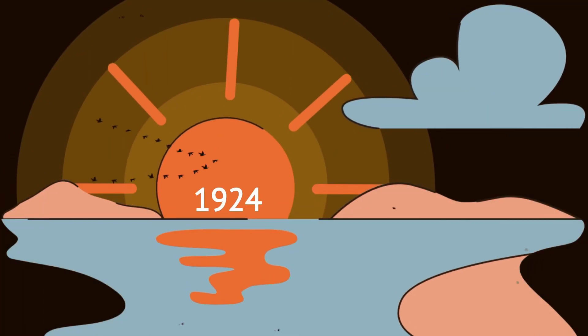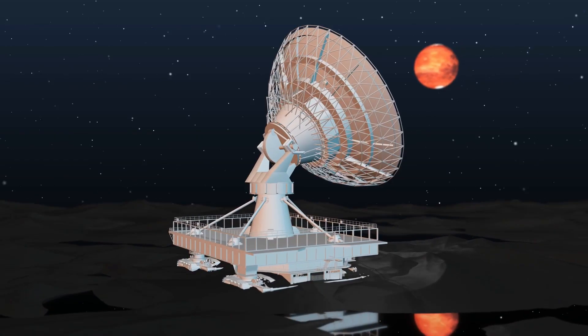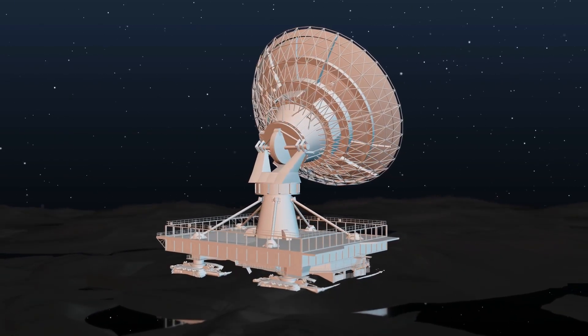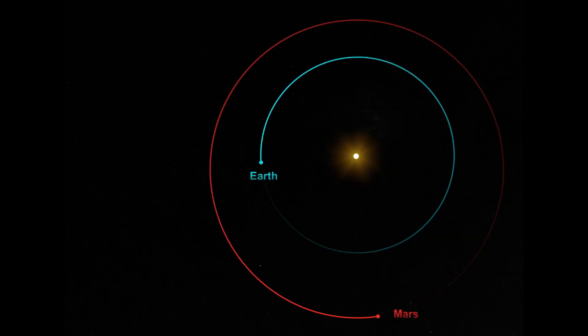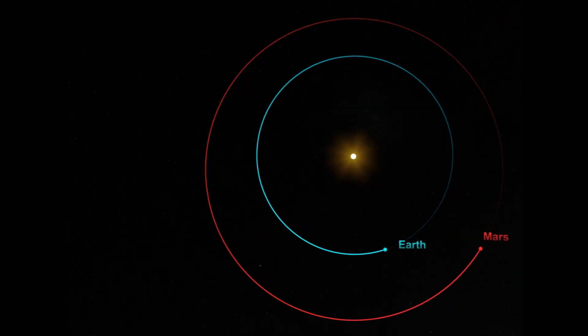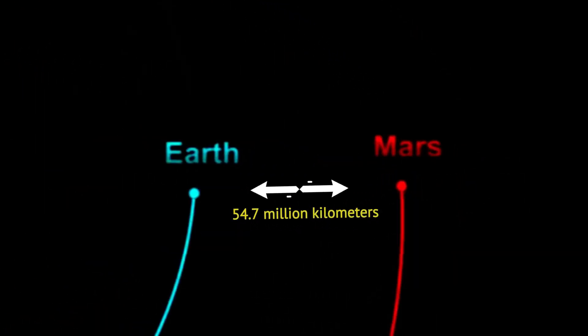It all began in the summer of 1924, when an American astronomer called David Todd endeavored to listen to radio signals from the planet Mars. The timing was perfect. Mars would be at opposition, meaning that for a brief window, it would be at its closest point to Earth, coming within a meager 34 million miles of our planet.